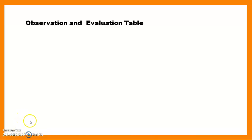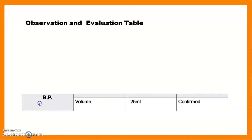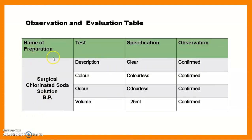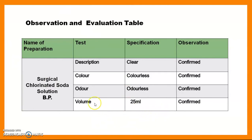Now we move towards the observation and evaluation table. The table should contain the name of the preparation, test, specification, and observation. Name of preparation: Surgical Chlorinated Soda Solution BP. Description: clear — confirmed. Color: colorless — confirmed. Odor: odorless — confirmed. Volume: 25 ml — confirmed. All specifications should be checked during preparation. This is how we maintain the observation and evaluation table.